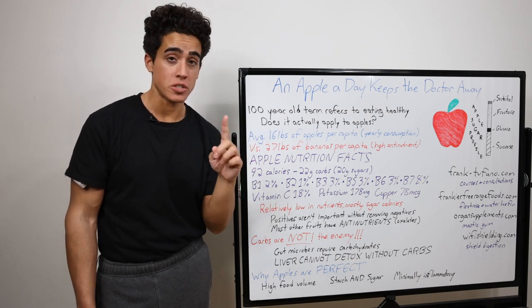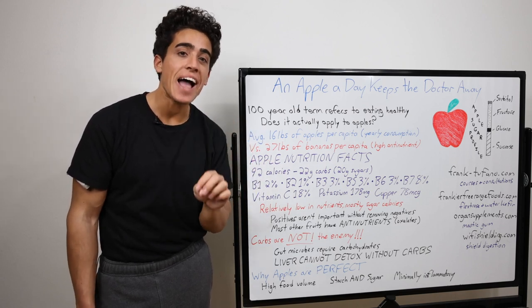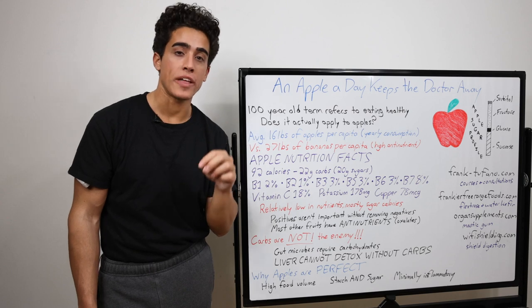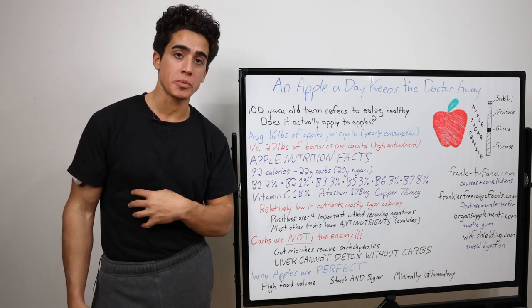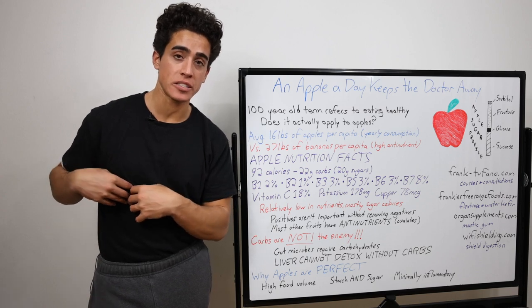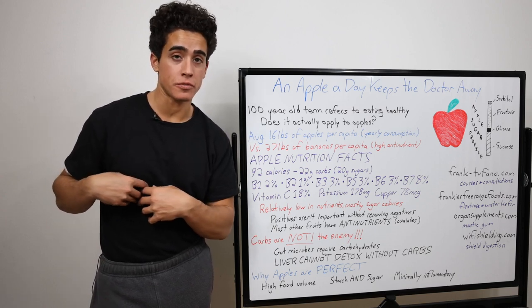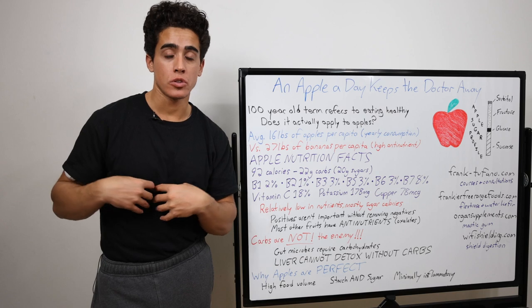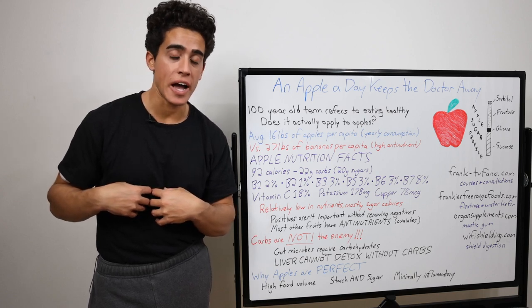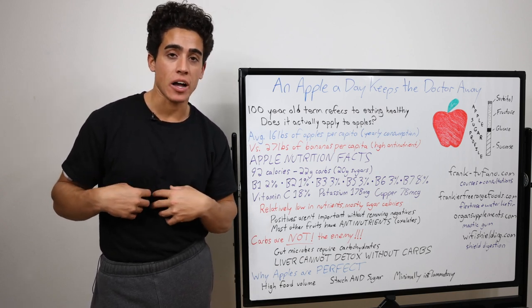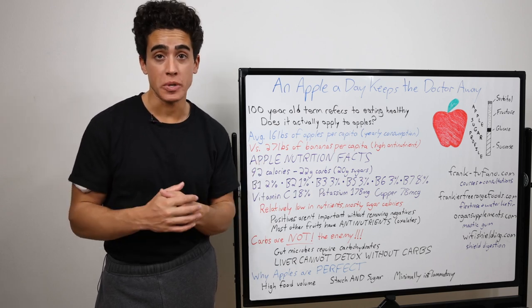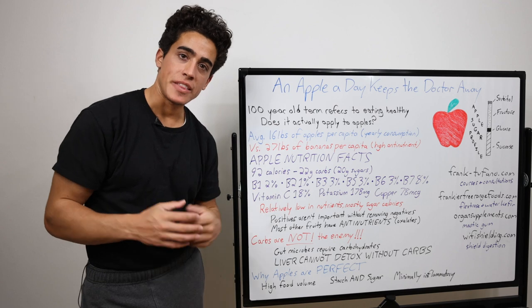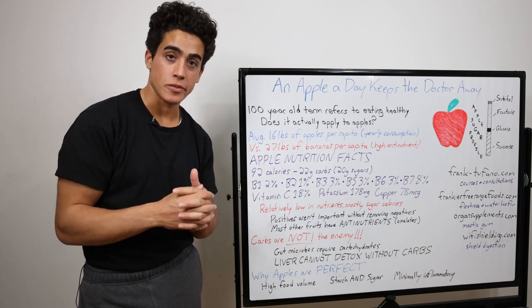On top of that, most importantly, the liver cannot detox without carbohydrates. Fats and proteins promote hyperabsorption of nutrients. So as soon as those toxins come out of the liver, whether they're fat-soluble or water-soluble, the low motility of a keto or carnivore diet, the high fat content just promotes the reabsorption of anything that you might have been able to remove.